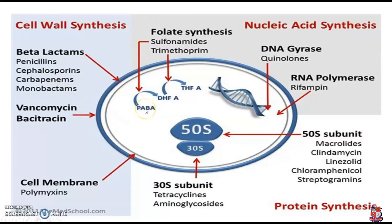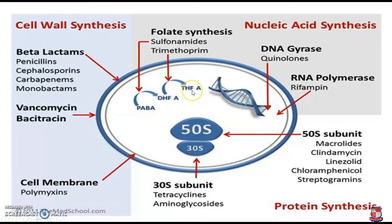Here you can see: PABA (para-aminobenzoic acid) is converted into dihydrofolate, and dihydrofolate is then converted into tetrahydrofolic acid. Sulfonamide inhibits the conversion of PABA to dihydrofolate in the presence of the enzyme dihydropteroate synthase. Trimethoprim inhibits the dihydrofolate reductase enzyme. These are responsible for synthesis of RNA as well as proteins, which are essential materials for bacterial development.